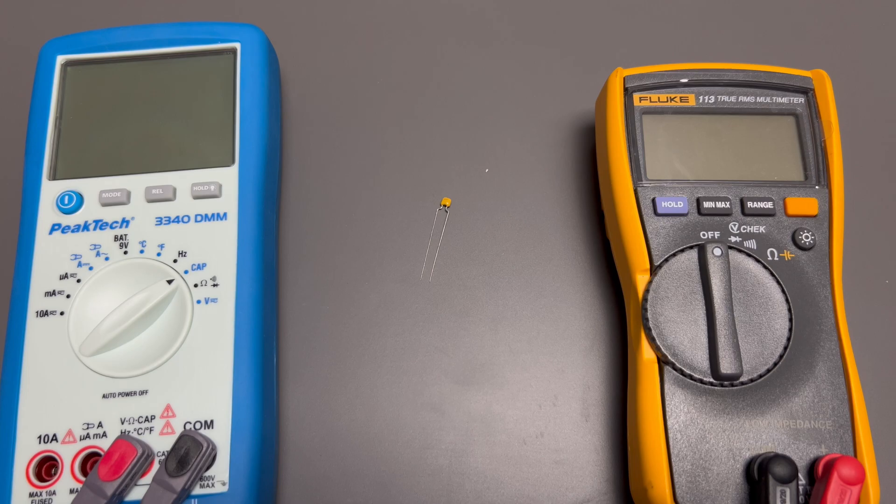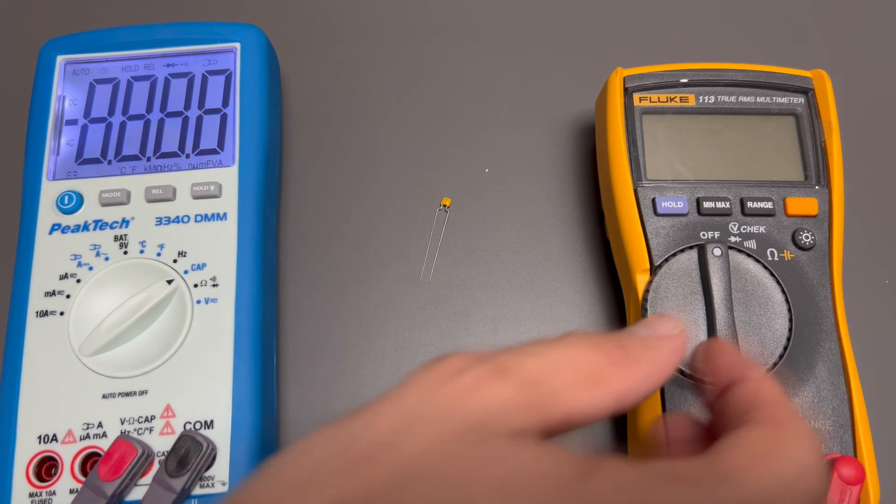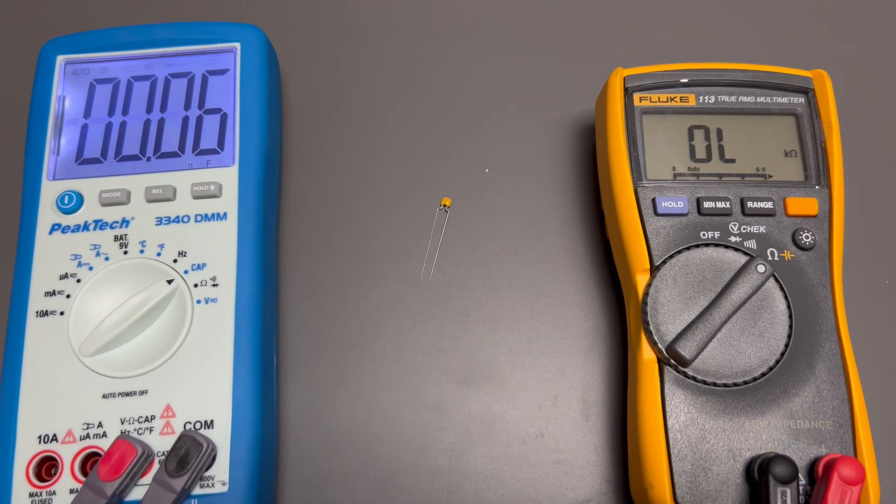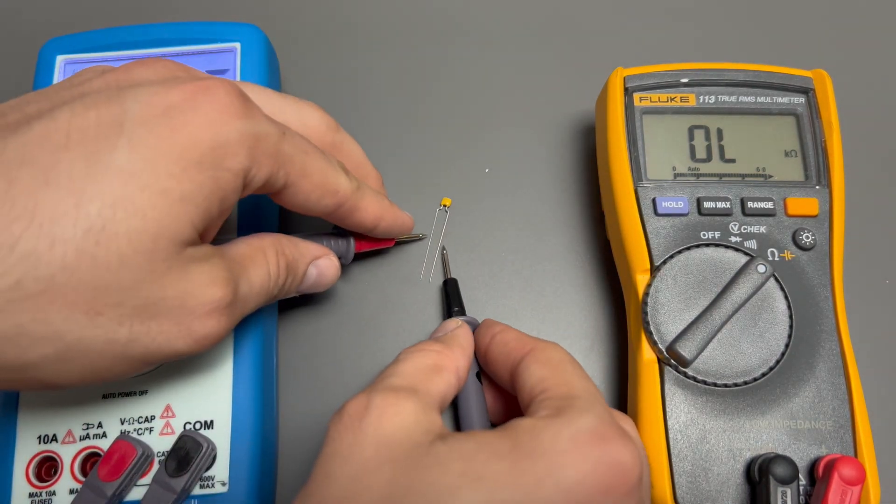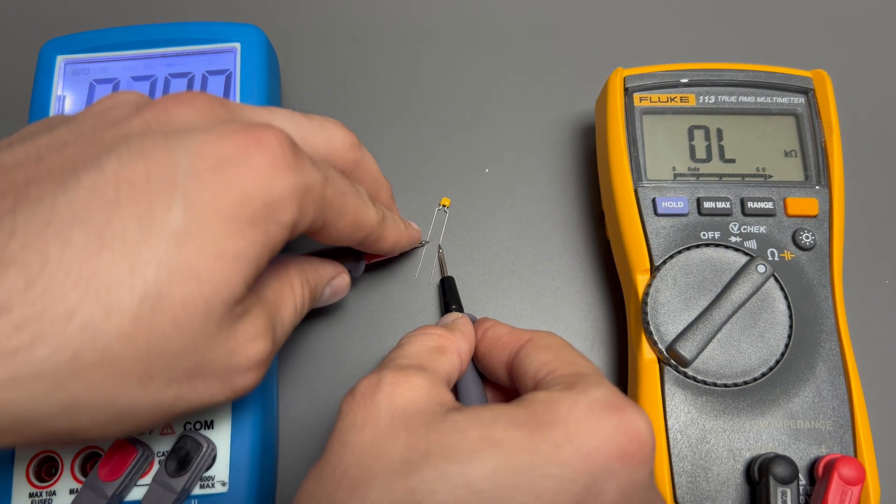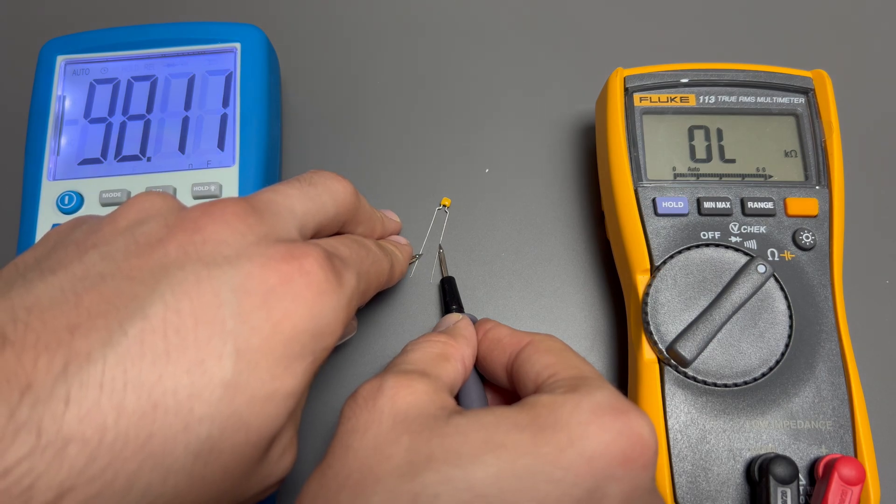Set the function range switch to capacitance. Turn off power and discharge the capacitor before attempting a capacitance measurement. Use the DCV function to confirm that the capacitor is discharged.